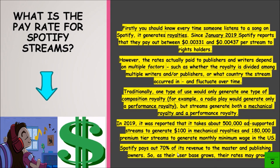Now, what is the pay rate for Spotify streams? Every time someone listens to a song on Spotify, it generates royalties. Since January 2019, Spotify reports that they pay out between $0.00331 and $0.00437 per stream to all rights holders. However, the rates actually paid to publishers and writers depend on multiple factors, such as whether the royalty is divided among multiple writers or publishers, or what country the stream occurs in, and it fluctuates over time.